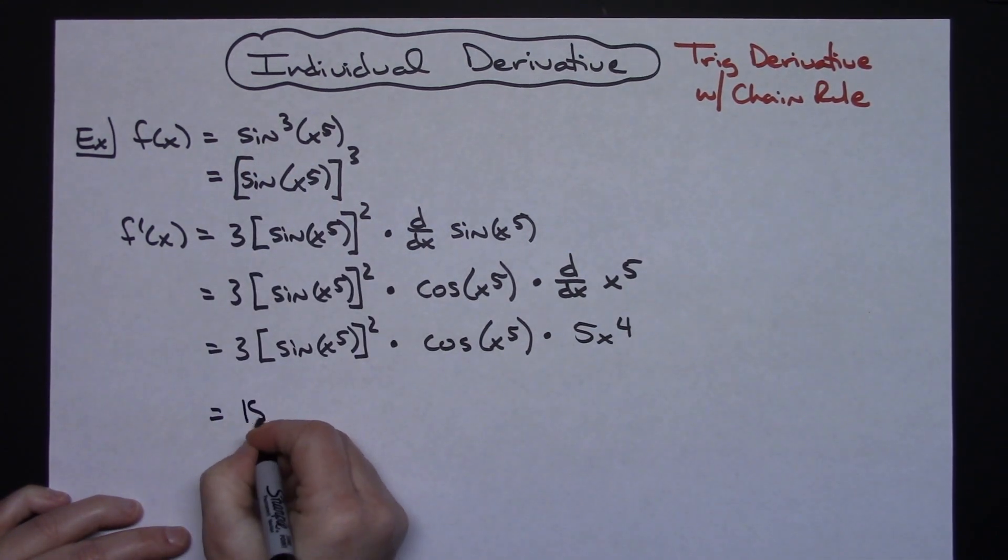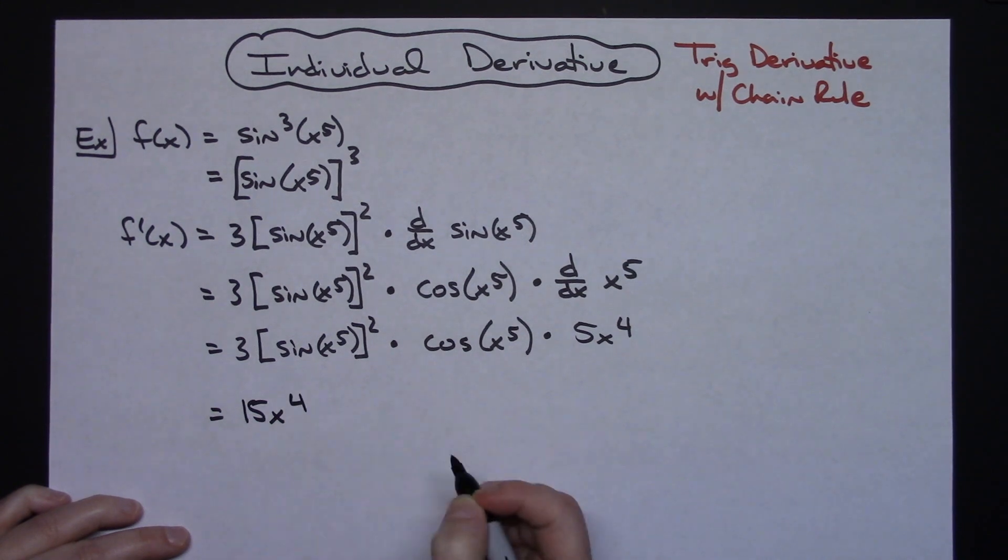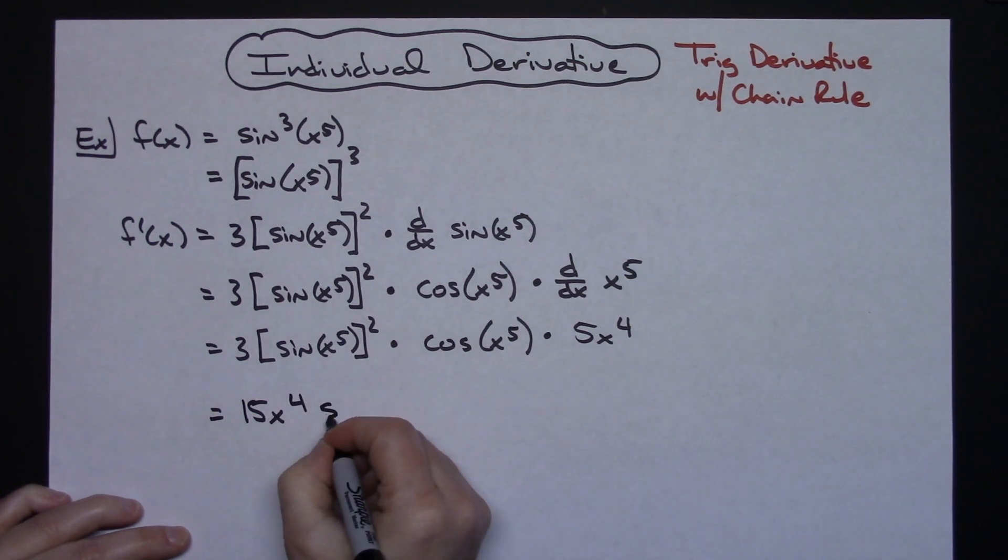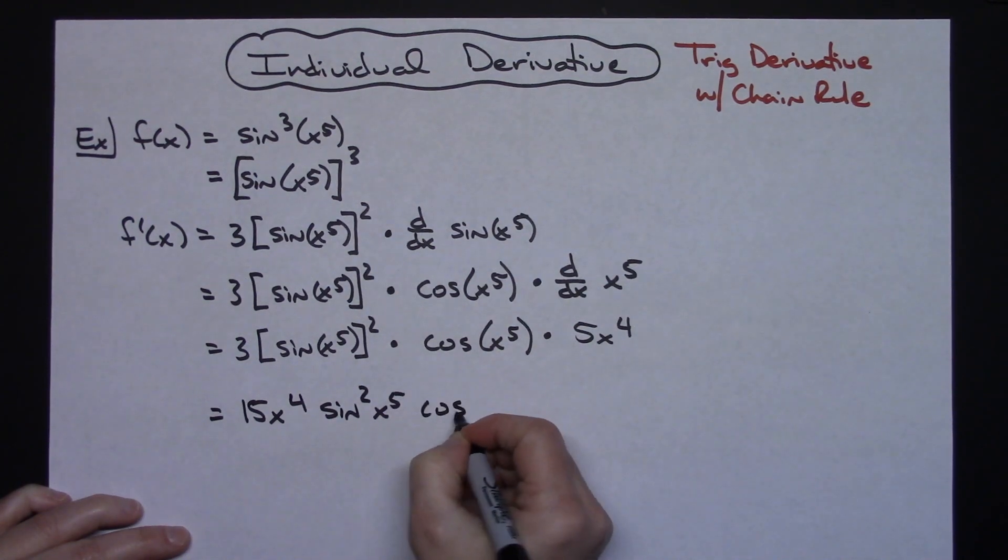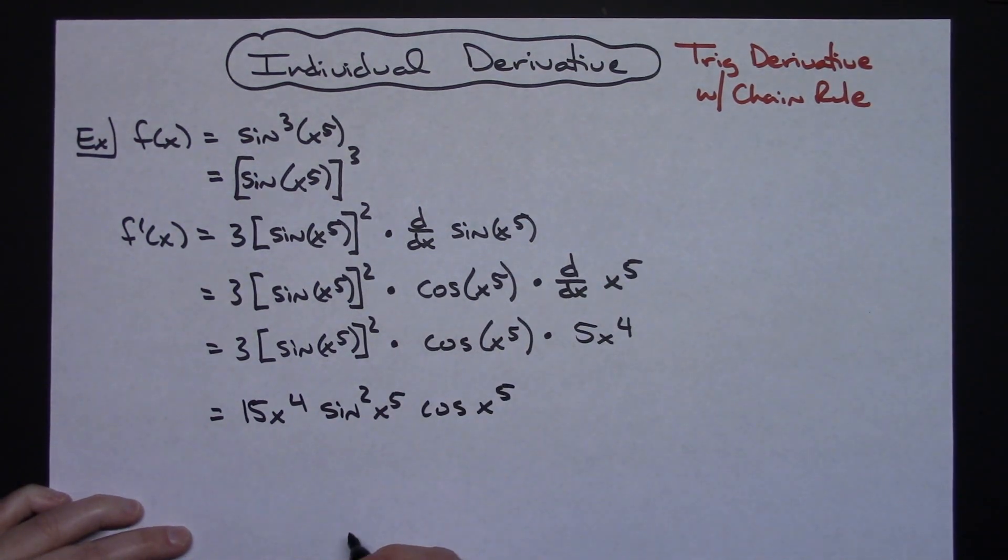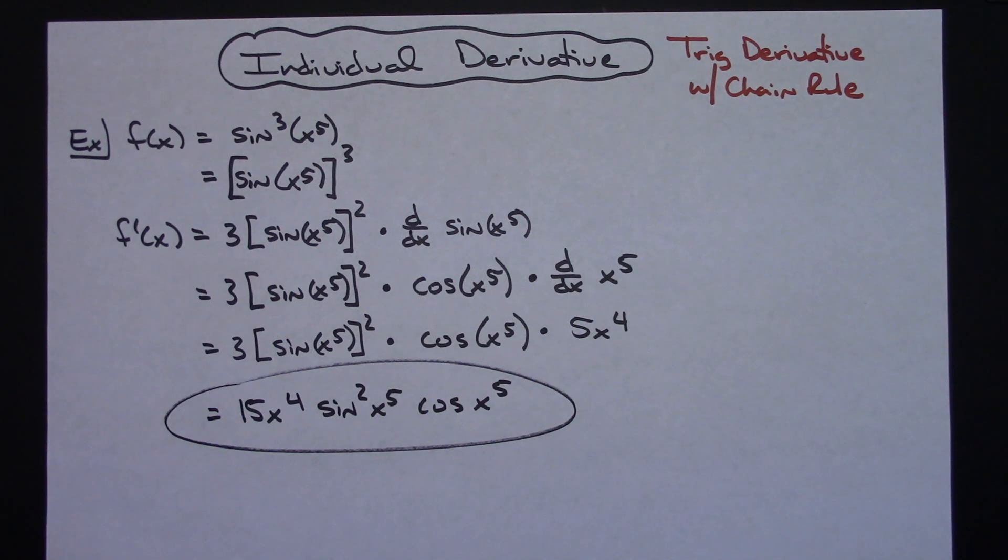So five times three is going to give me 15 x to the fourth out in front. Then I'm going to do the sine squared of x to the fifth and then cosine x to the fifth. So final answer right there.